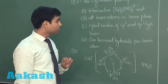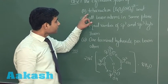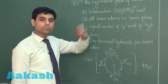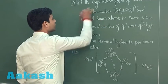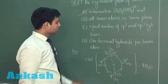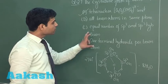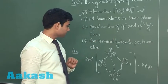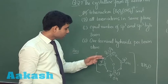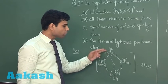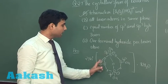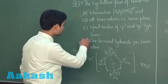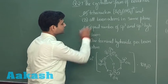The second option is not correct. But it does have a tetranuclear B₄O₅(OH)₄²⁻ unit, so that is our correct option. Option C says equal number of sp2 and sp3 hybridized boron, which is a true statement because we have two boron atoms with sp3 hybridization and two boron atoms with sp2 hybridization. So this is a correct statement.